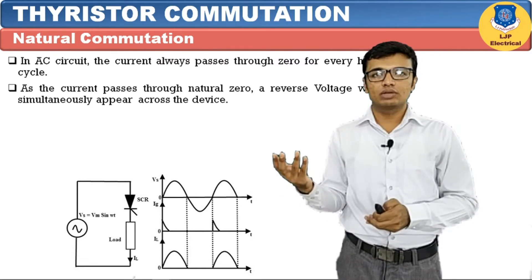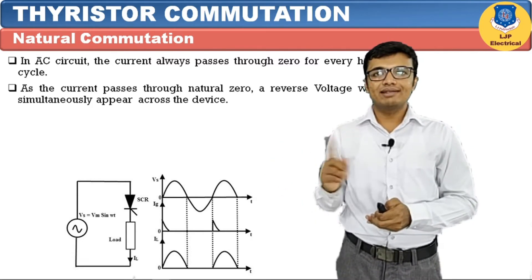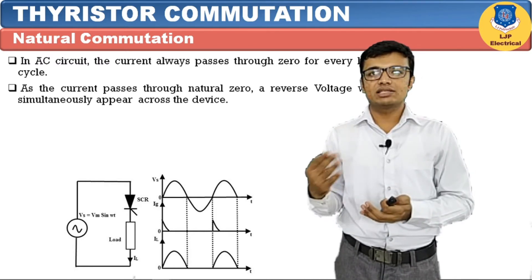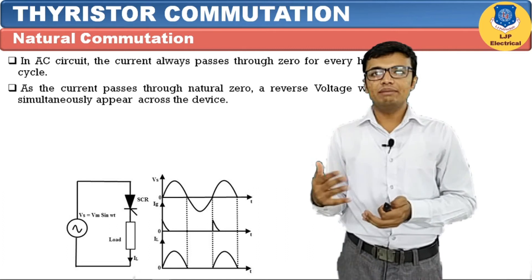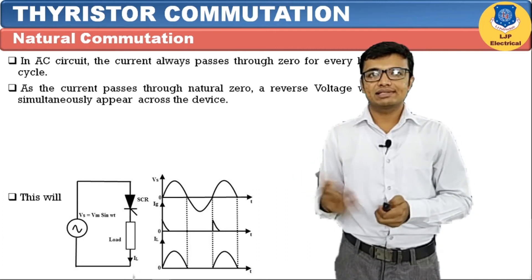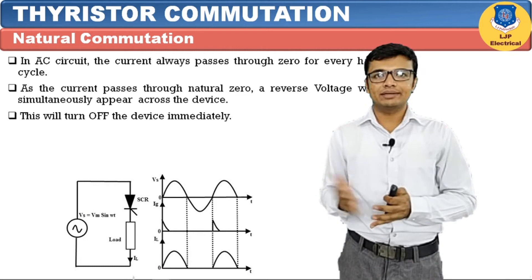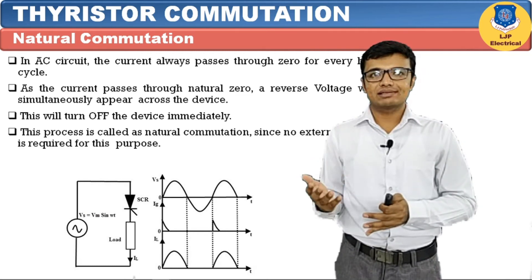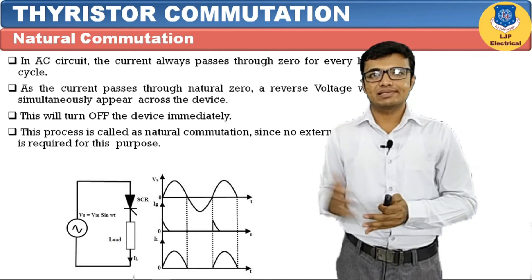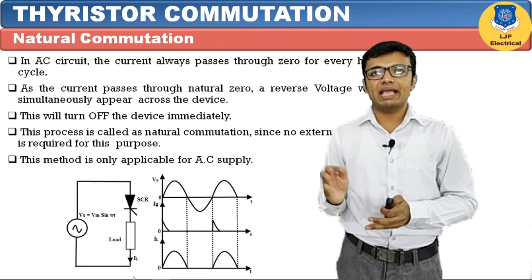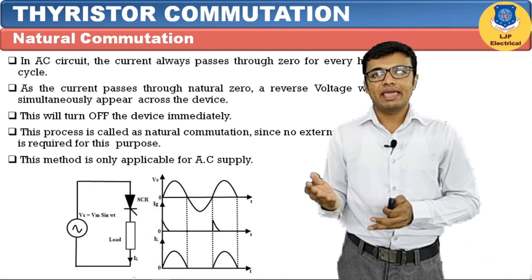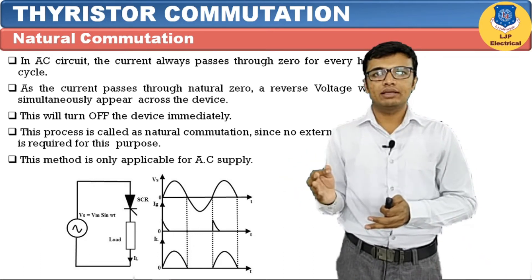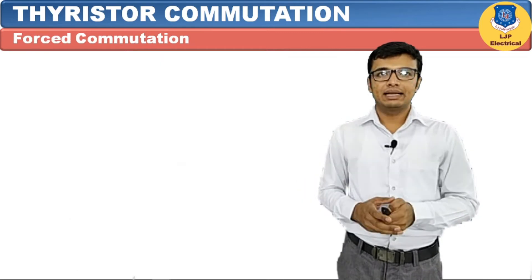During one cycle the current passes through two zero points. As the current passes through the natural zero, a reverse voltage will appear across the device and the SCR will turn off immediately. This process is called natural commutation. No external pulse is required and this method is only applicable for AC supply — it cannot work on DC supply.